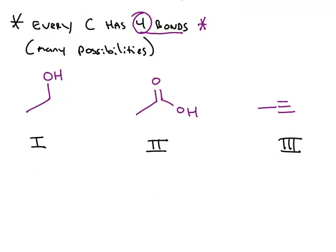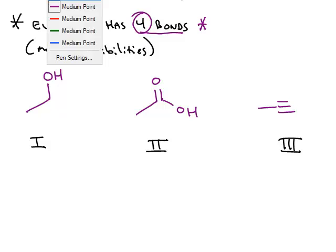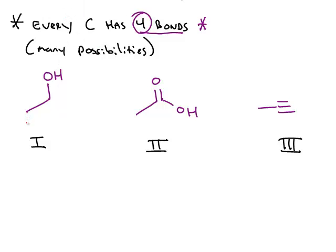The same three structures we started with are shown in this bond-line formula. Structure number one: we have the end of the line, so this represents a carbon atom. Here we have the intersection of two lines, so that's another carbon atom.